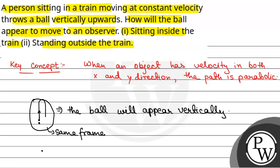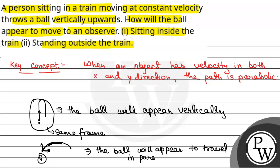Lekin agar koi person bahar khada hai, to us person ka khud movement nahi hai. Ball ko vertically feka gaya hai aur train aage ja rahi hai, to time ke saath ball upar bhi jayegi aur aage bhi jayegi. So for the person standing outside, the ball will appear to travel in a parabolic path, because the train is moving in the forward direction.